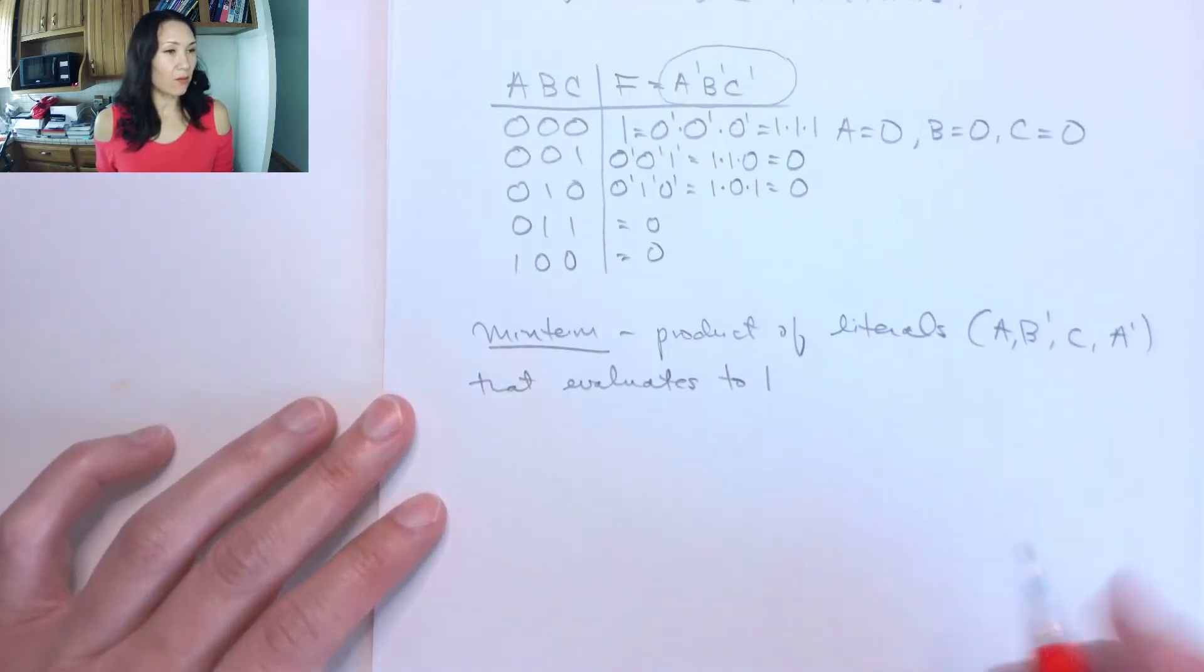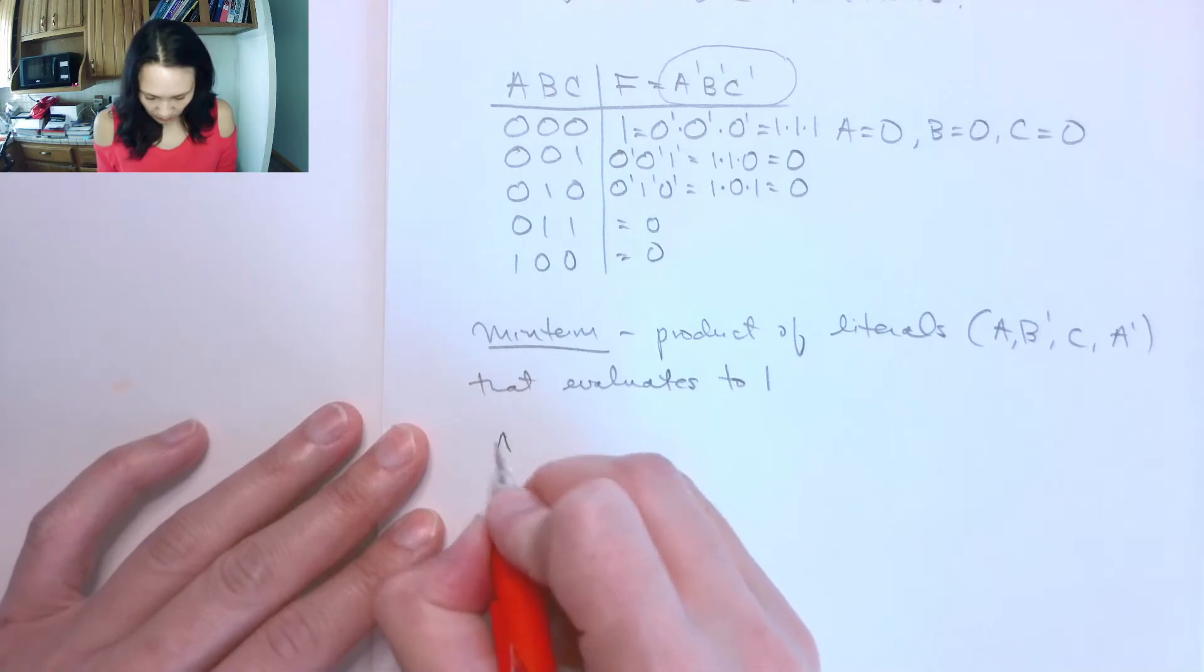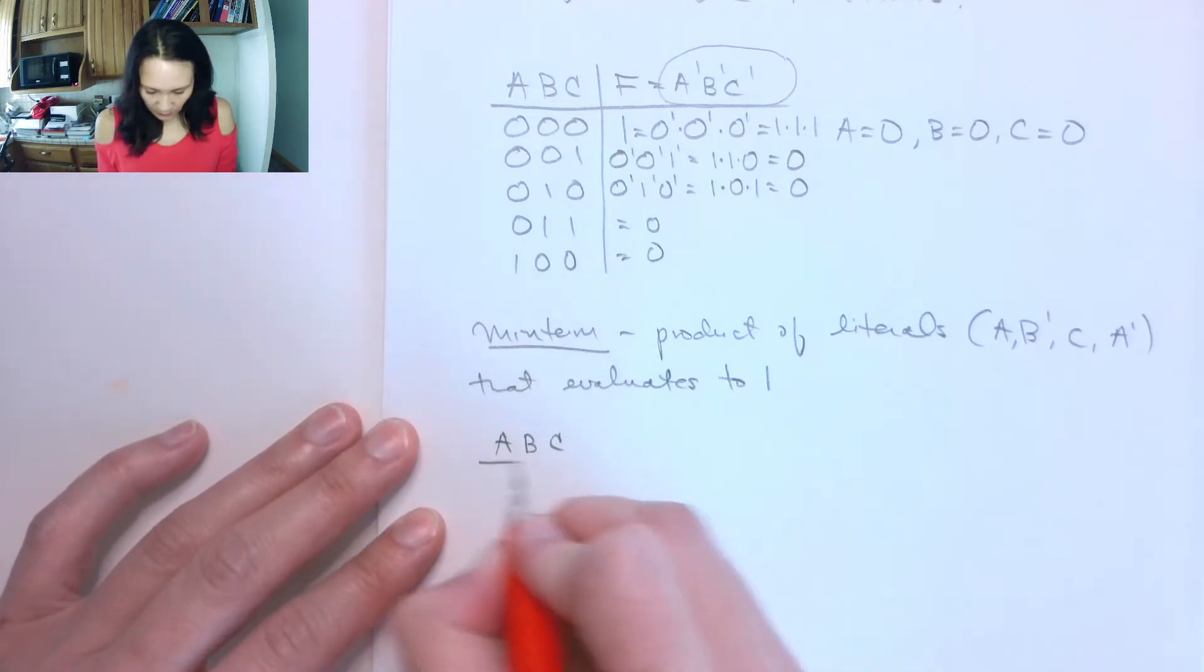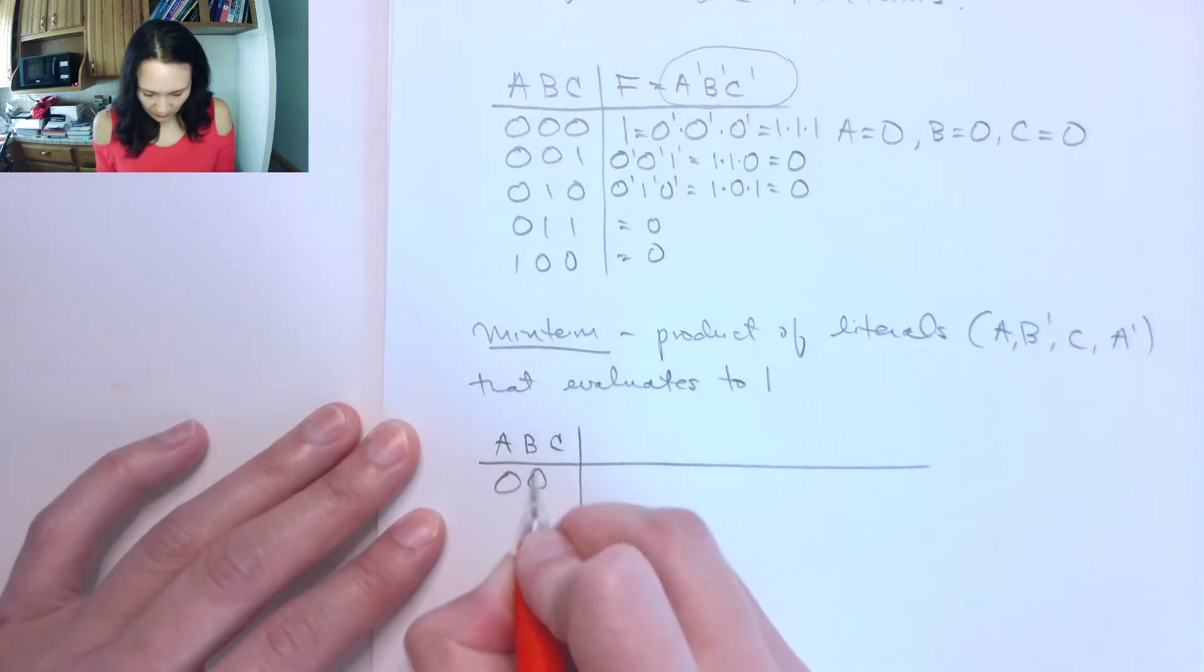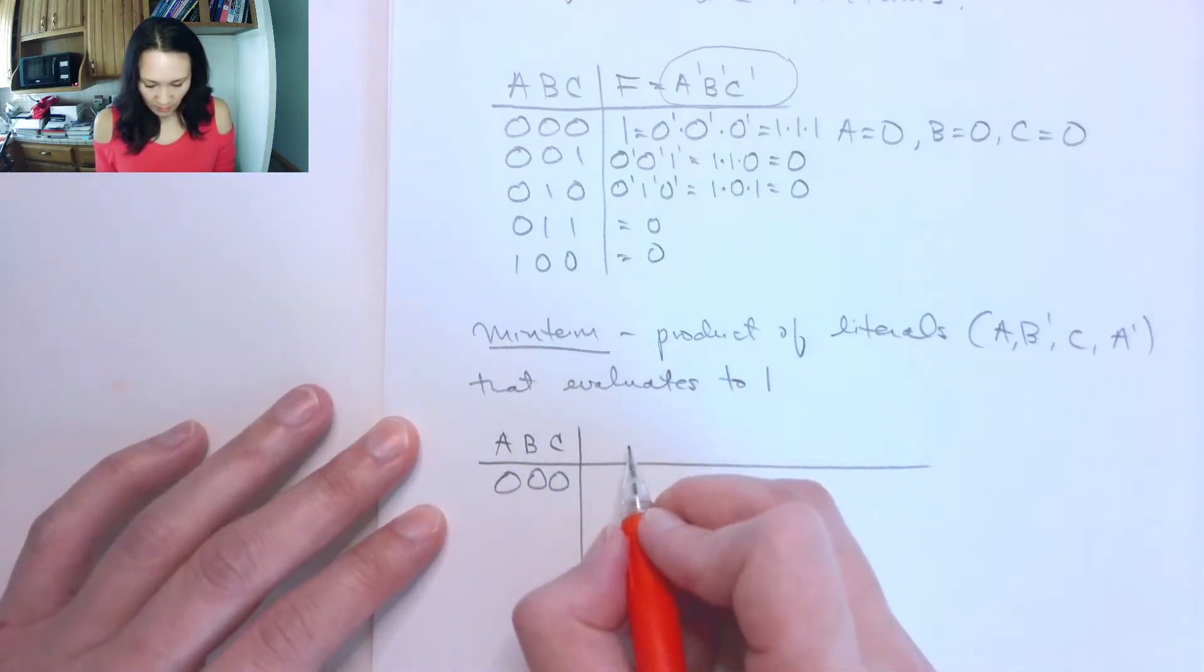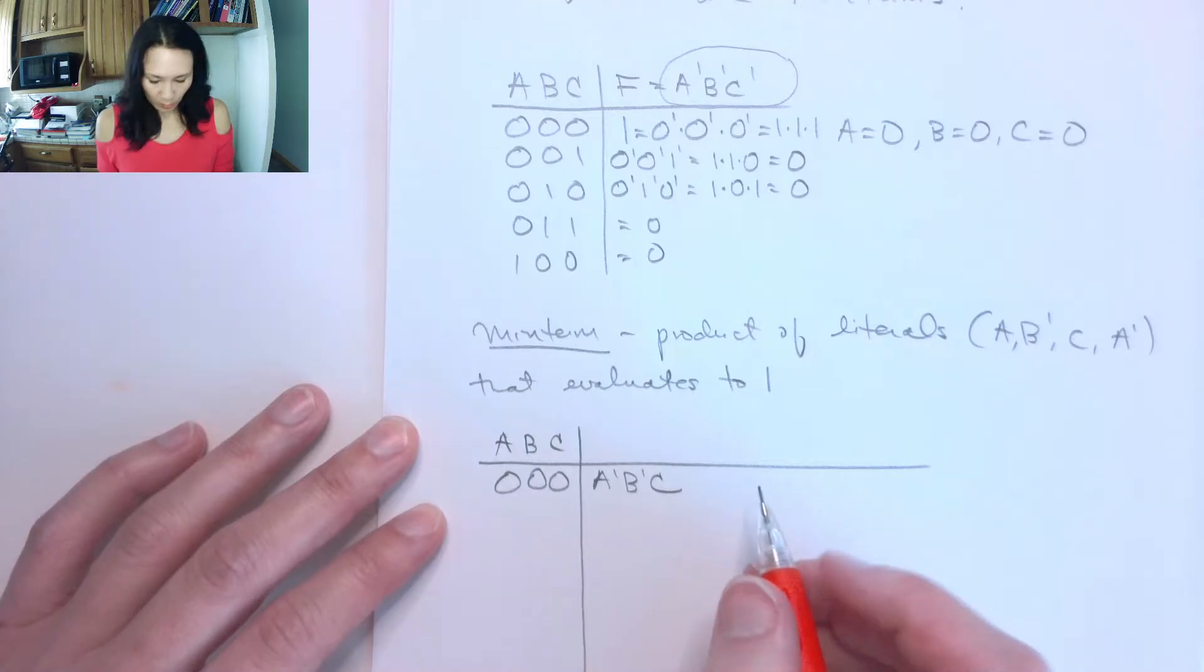Okay, so let's make a list of all of the minterms and we'll give them their own numbering. So let me do this example again, we'll make a bigger table this time. So for 0, 0, 0, we saw that F would need to be A naught, B naught, C naught in order to get a 1 on the output.